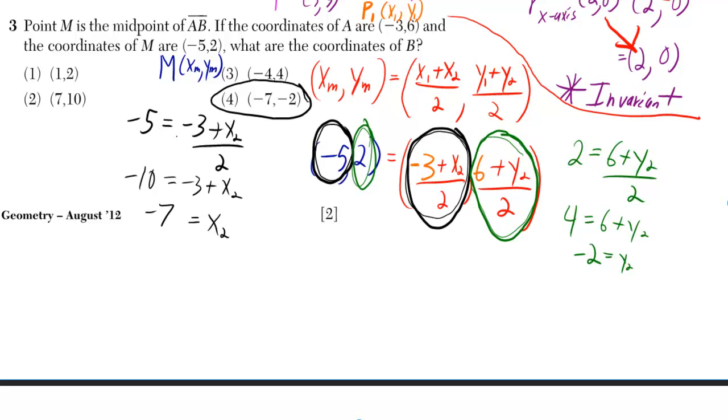In fact, when you solve the one in black here, you get x2 has to equal negative 7. And since it's multiple choice, you already have your answer. But if you go ahead and solve for the y coordinate, you get negative 2.